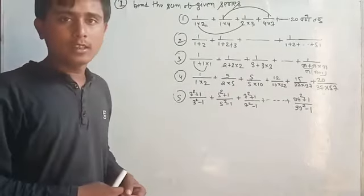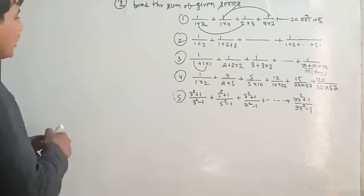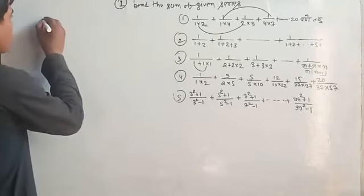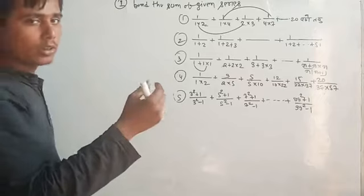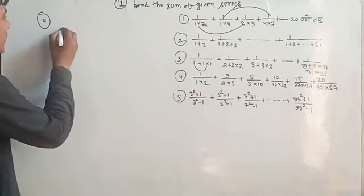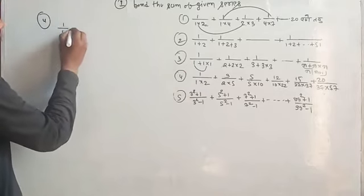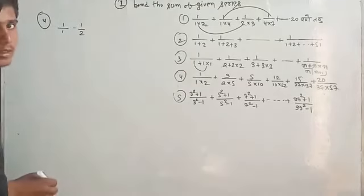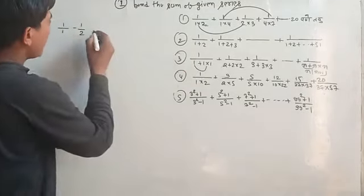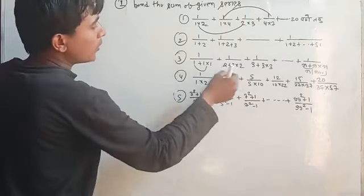The answer is, okay? I will break the 4th question. 1 upon 1 by 2, 1 by 1 minus 1 by 2 plus 3 upon 2 into 5.